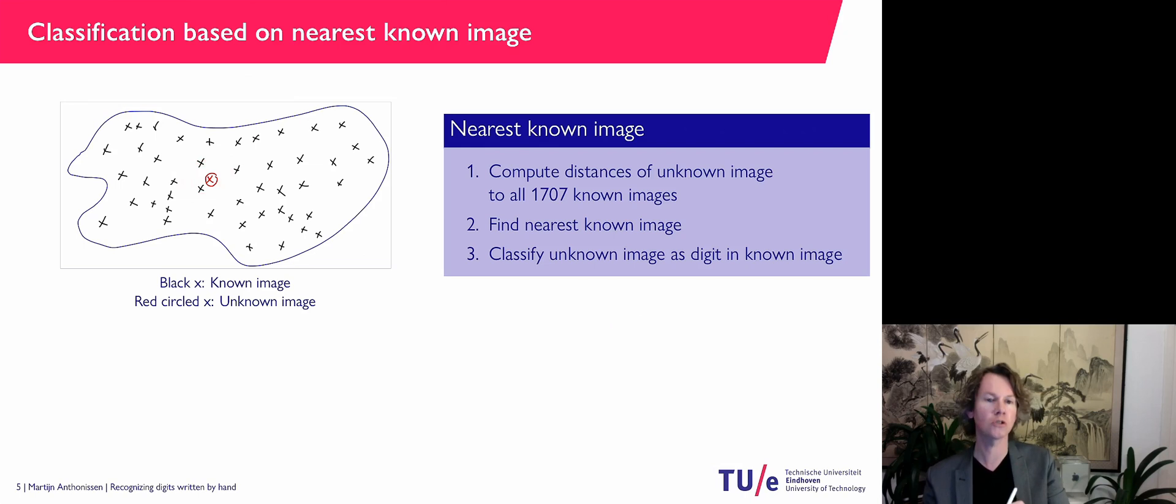Then I'm going to find the one that is nearest. I know which digit is in there. And that's how I classify my unknown image. So how does this work? Quite well.